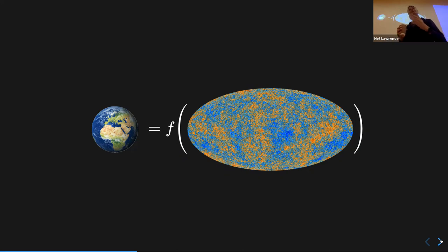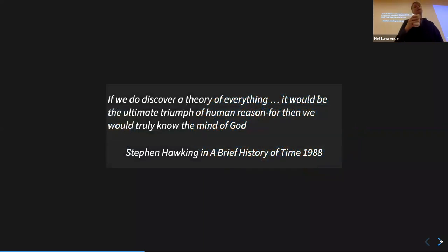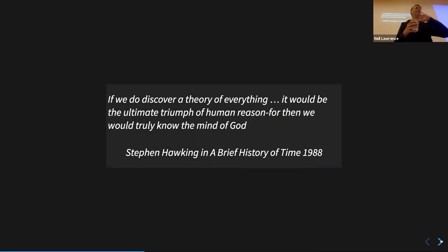So it's true the universe isn't Gaussian now, but it was. This links to the Hawking quote: if we do discover a theory of everything, we would truly know the mind of God. But the mind of God we would know is the Conway mind of God - Conway has described this universe and you're still stuck, because you don't necessarily know what's going to happen without doing the computation.